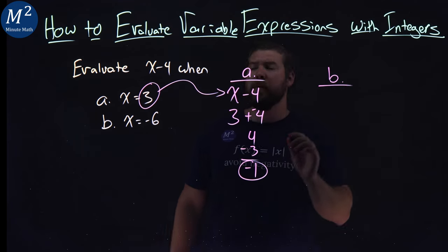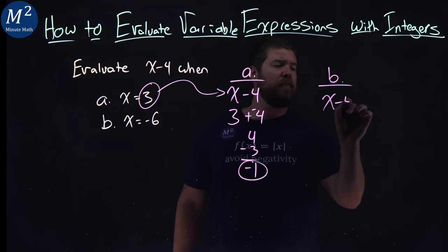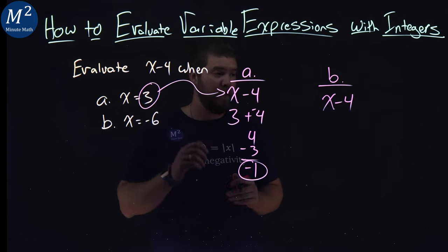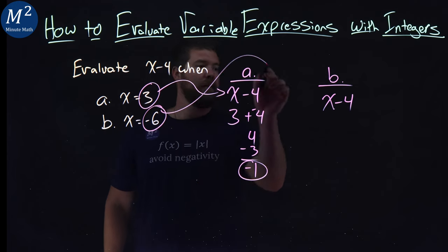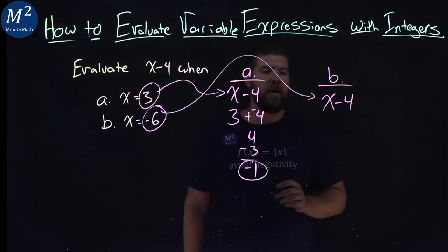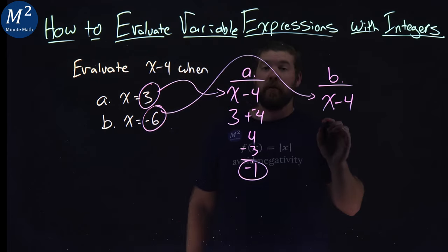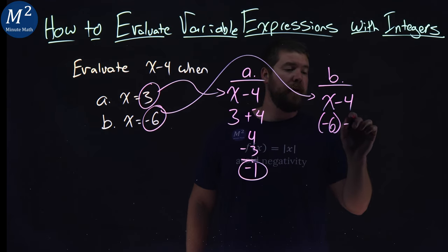Let's do the same thing with part B. We have x minus 4 when x equals negative 6. Again, I'm going to take this negative 6 and plug it in for x. Negative 6 here minus 4.